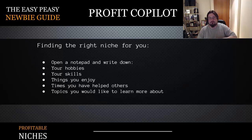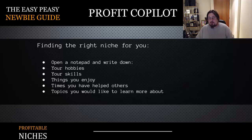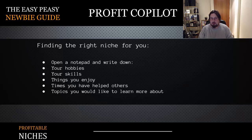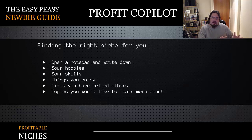Let's look at how to find the right niche for you, because there are so many to choose from it can be difficult. Open up a word processor or notepad and list down your hobbies and skills — and more importantly, the things you enjoy doing. Also take note of times you've helped others or given advice, maybe helping with relationship problems. Write down topics you'd like to learn more about, even areas where you don't yet consider yourself proficient enough to advise someone else.